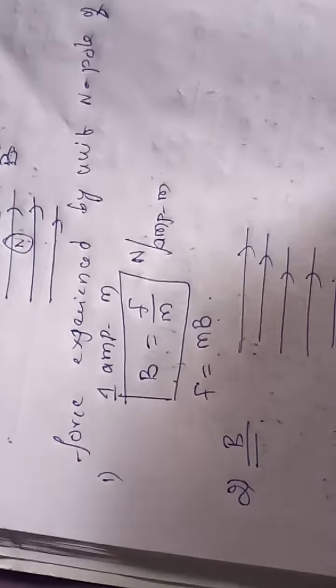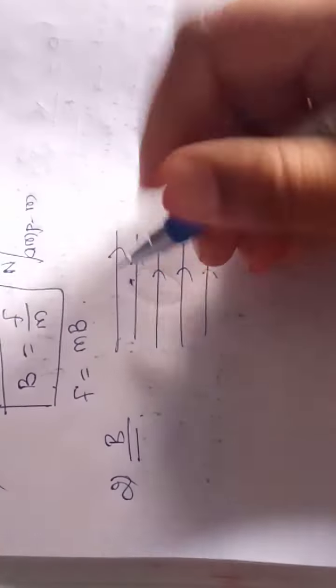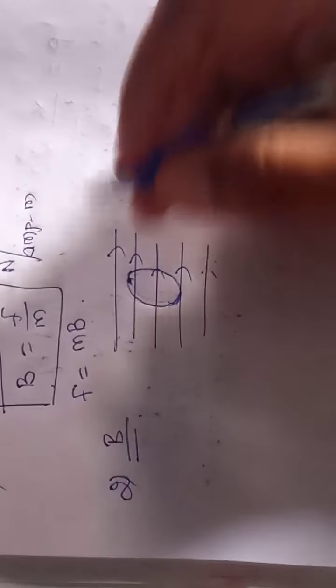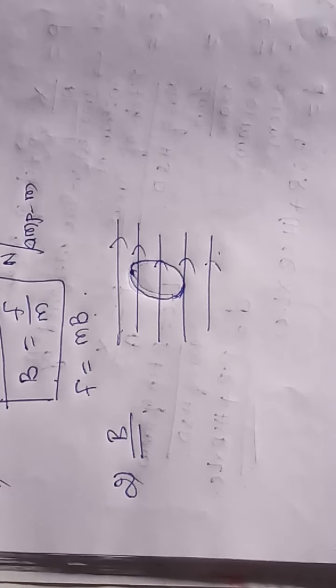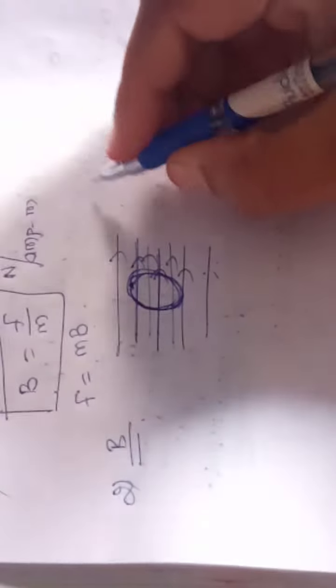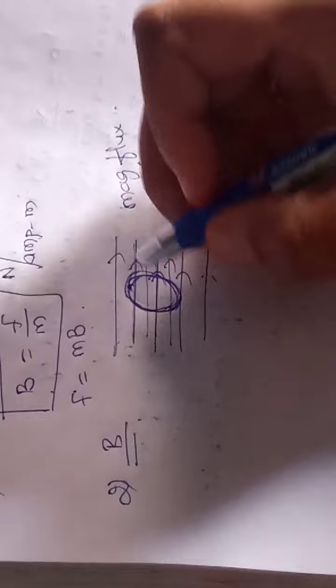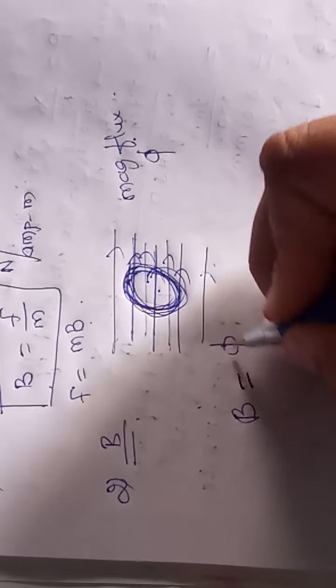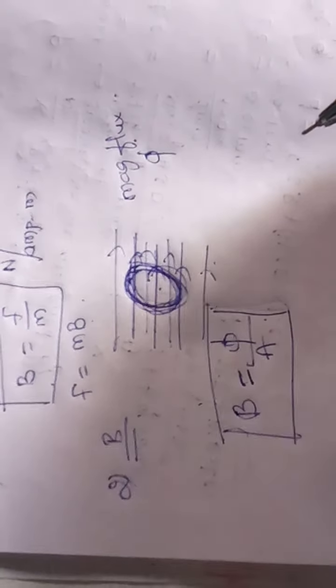Now the second way of defining magnetic field induction. I consider a number of magnetic flux lines, and in that I consider a small area perpendicular to the flow of flux lines. Now we look at how many flux lines are flowing through this area — we call it magnetic flux, denoted by phi. The number of flux lines flowing through this perpendicular area is called magnetic flux. So magnetic induction is defined as magnetic flux per unit area.